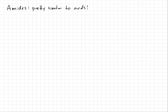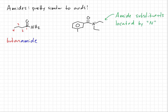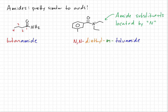Amides are named similarly to carboxylic acids. For instance, this 4-carbon amide would be called butanamide. The key wrinkle when naming amides is that substituents may be located on the nitrogen atom. The location of those substituents is indicated with the letter N. For example, this compound is called N,N-diethyl-meta-toluamide, indicating both ethyl groups are on the amide nitrogen. You may recognize this compound — it is DEET, the active ingredient in mosquito spray.